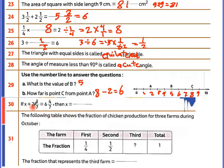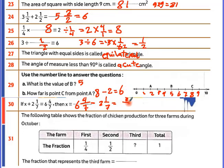Move the plus to minus. So 6 and 4 over 7 minus 2 and 1 over 7 equals: fractions give 4 minus 1 equals 3 over 7, and the denominator stays the same; whole numbers 6 minus 2 equals 4. So the answer is 4 and 3 over 7.